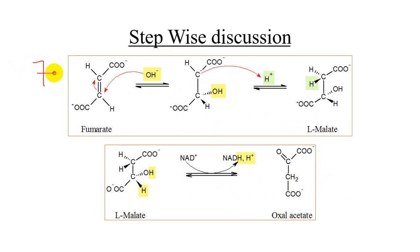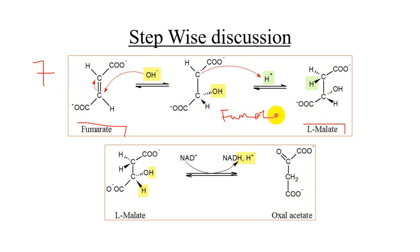In the seventh step, reversible hydration takes place: fumarate is converted to L-malate. The enzyme fumarase catalyzes this reaction. Hydrogen and oxygen are added back into the substrate — the reverse of what was removed in the previous step.